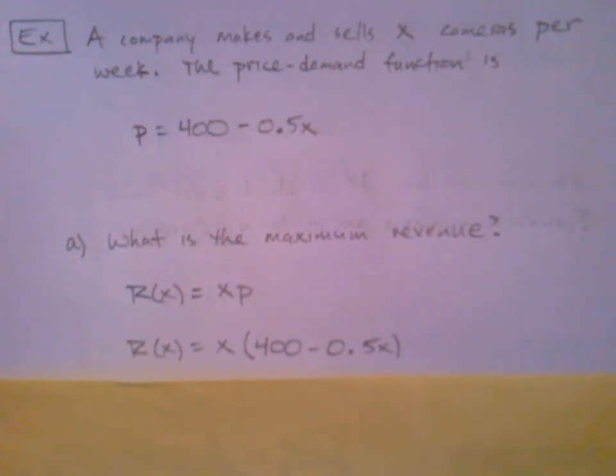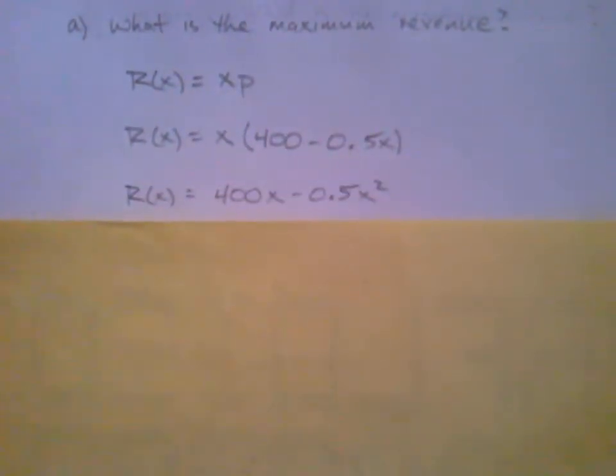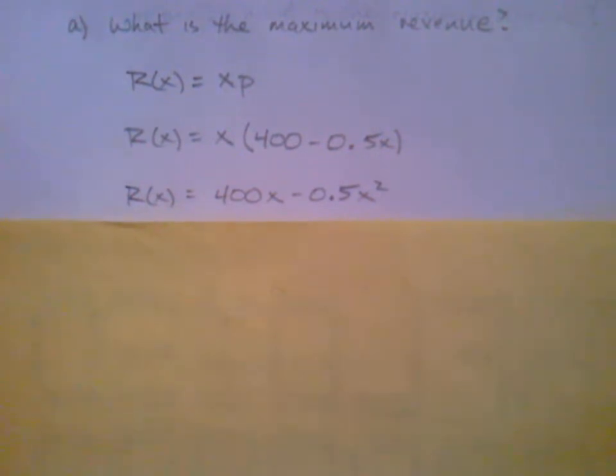So we've got the revenue in terms of only x. We're going to simplify that because we know we're about to take a derivative. 400x minus 0.5x squared. The last thing we need before we start looking for the absolute max, we want to know what interval of x.